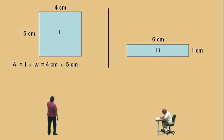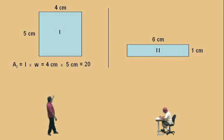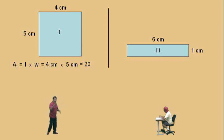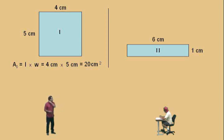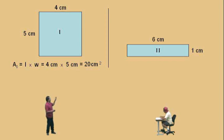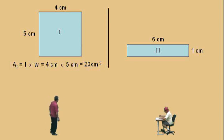Now don't forget, you have dimensions here. We have centimeters times centimeters. Some people like to think of it as centimeters times centimeters is centimeters with an exponent of 2 — that's how it's written, centimeters squared. Dimensions for area are always something squared. Since our side lengths were given in centimeters, it's centimeters squared. If our side lengths were in inches, it would be inches squared; if in feet, feet squared. So the area of this rectangle is 20 centimeters squared.